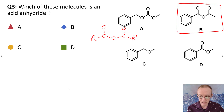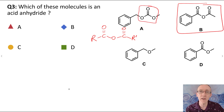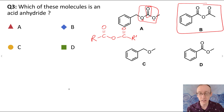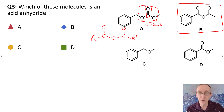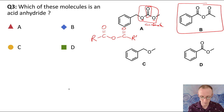Now it might be tempting to say that A fits that, but it's the other way around — it has two single bonds between oxygen and the acyl carbon, and only one acyl group. So that's actually called a carbonate, which is a different functional group to an acid anhydride with different reactivity. So the answer to question three is B.